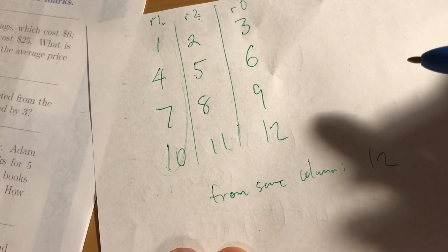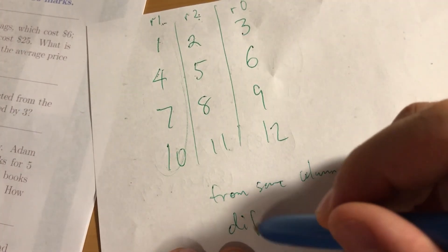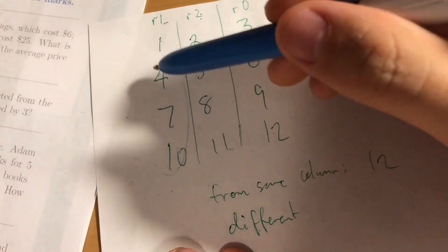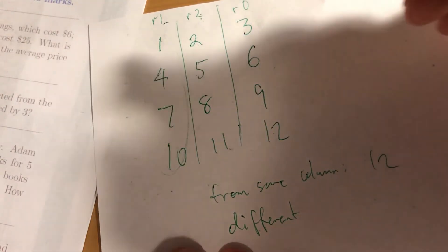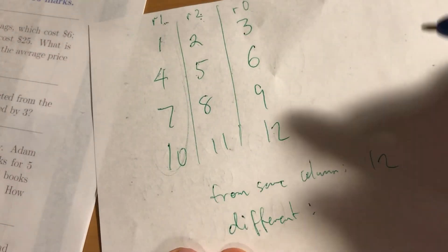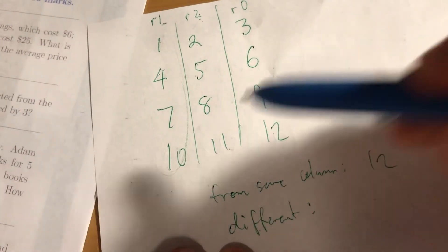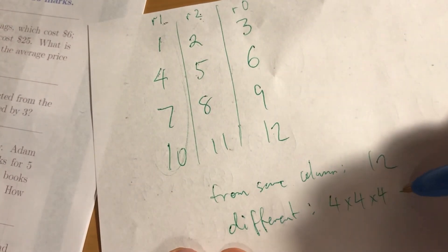If you pick them from different columns, there's 4 numbers to choose from for each column and they're independent. So it's 4 times 4 times 4, which is 64.